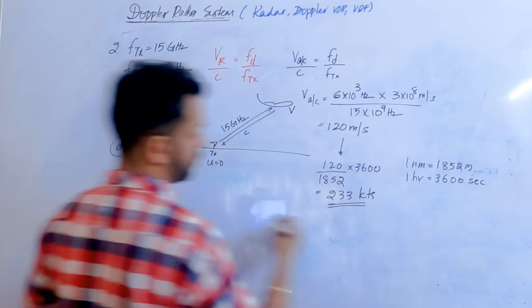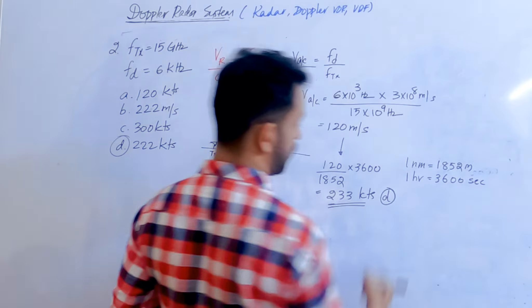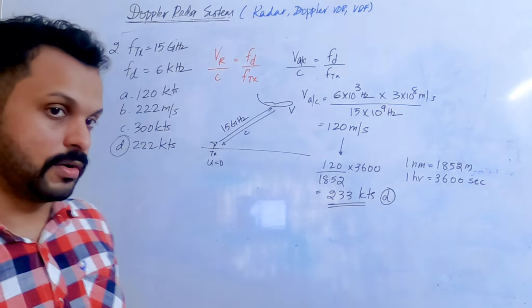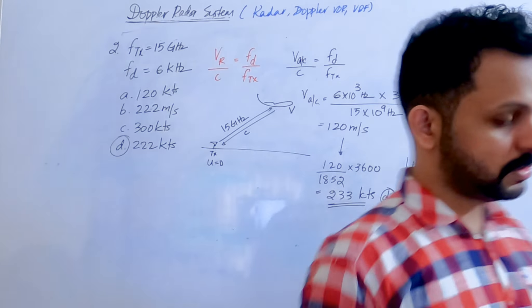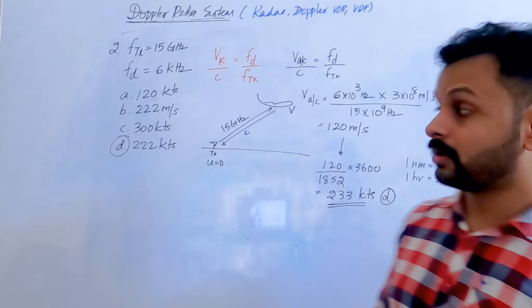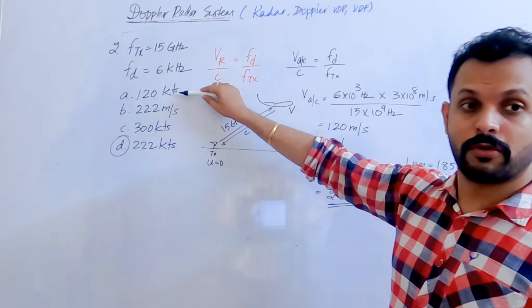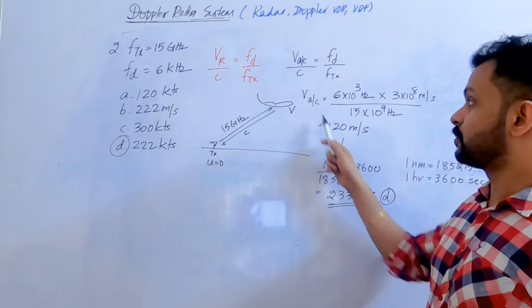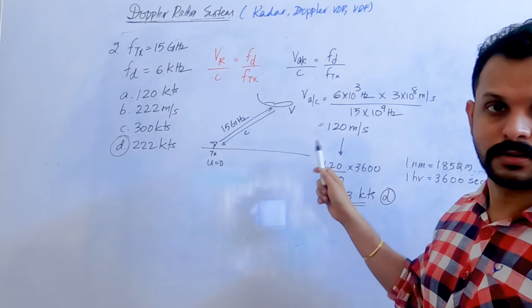The answer is 233 knots. Remember, do not fall for the 120 knots option — what you get from the equation is 120 meters per second, which you must then convert to knots.